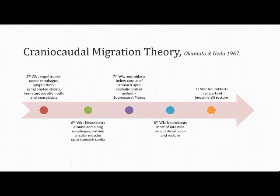The craniocaudal migration theory was proposed by Okamoto and Ueda in 1967. They studied 18 human embryos and fetuses of varying gestational ages from five weeks to nine months and reported that the myenteric plexus was formed by neuroblasts distributed throughout the gastrointestinal tract by craniocaudal migration from the fifth to twelfth week of gestation. By six weeks, neuroblasts were formed along the esophagus and migrated up to the circular muscles, present up to the cardia of the stomach.